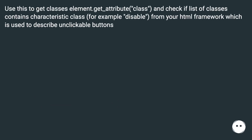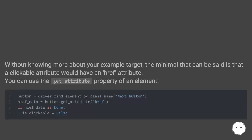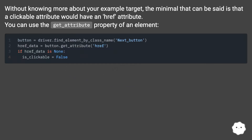Use this to get classes: element.get_attribute('class'), and check if the list of classes contains a characteristic class — for example, 'disabled' — from your HTML framework, which is used to describe unclickable buttons. Without knowing more about your target, the minimal that can be said is that a clickable element would have an href attribute.